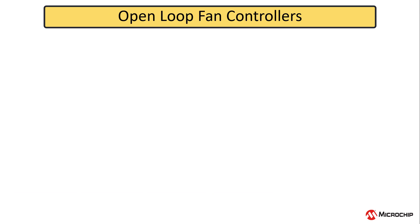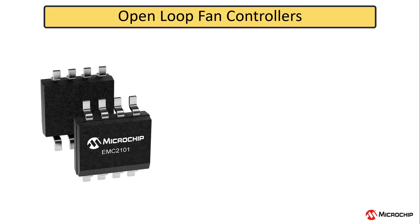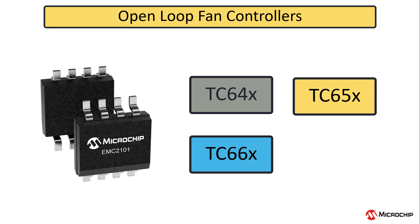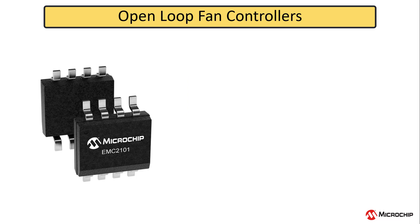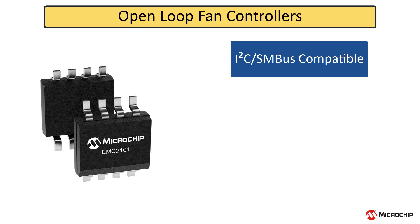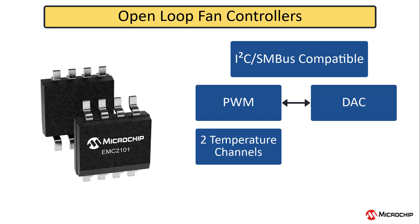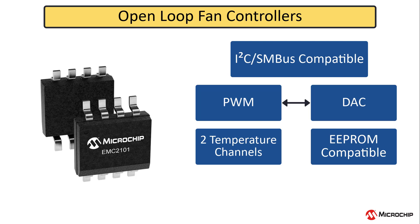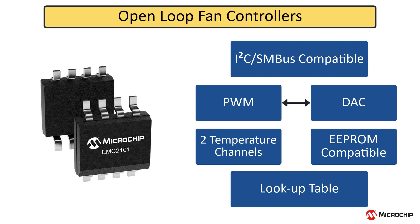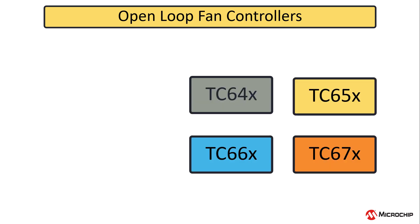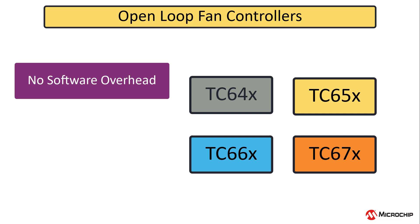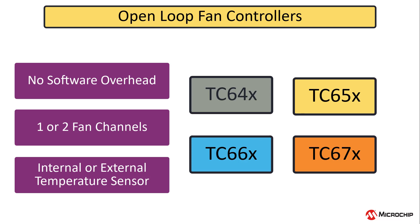In the open-loop fan controller group, we have the EMC 2101 and the TC64X, 65X, 66X, and 67X family. The EMC 2101 is also I2C and SMBus compatible and can control fans using PWM or a DAC. It has two temperature channels and has the option of interfacing to an external EEPROM for auto-programming upon power-up, and controls fan speed using a lookup table based on temperature. The TC6XX family is unique in that it does not require any software overhead and can control one or two fans based on an internal or external temperature sensor.